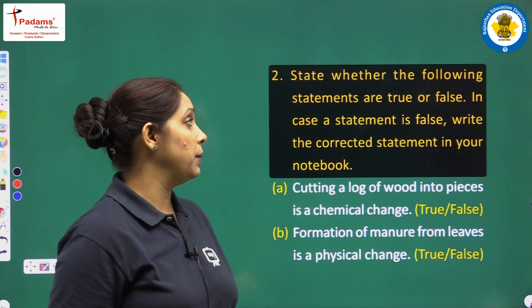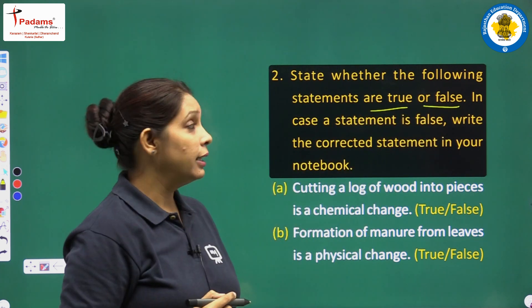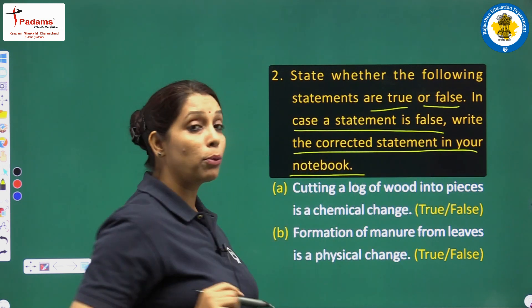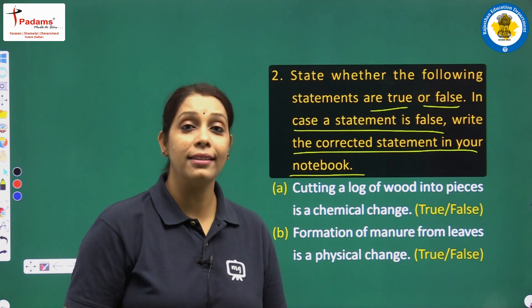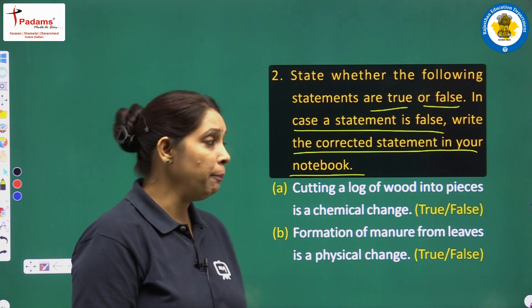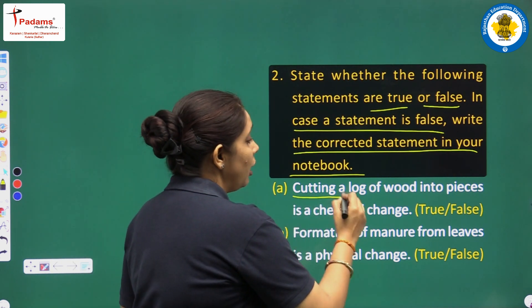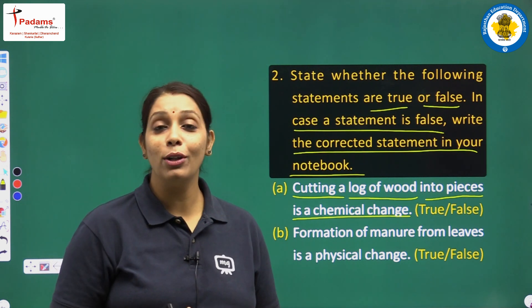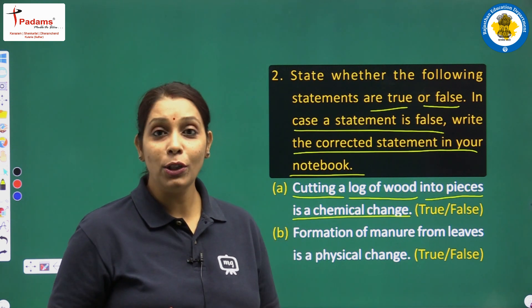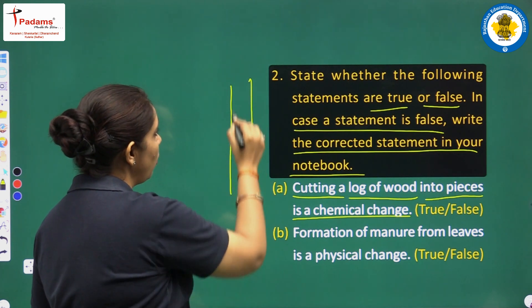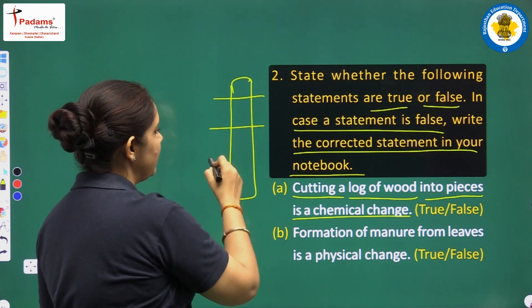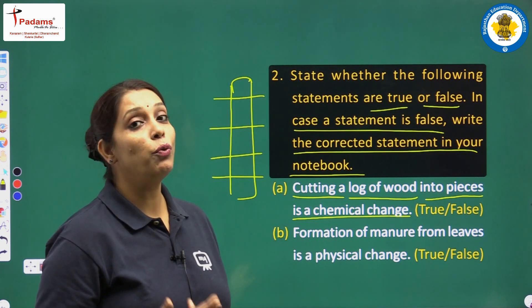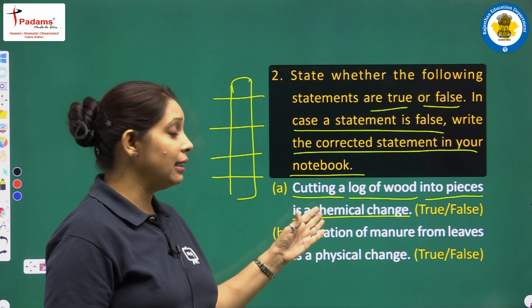Question 2: state whether the following statements are true or false. If a statement is false, write the corrected statement in your notebook. First: cutting a log of wood into pieces is a chemical change. No — cutting is not an example of chemical change. Only the size changes; there is no change in chemical composition and no new product is formed. So this statement is false — it is basically a physical change.